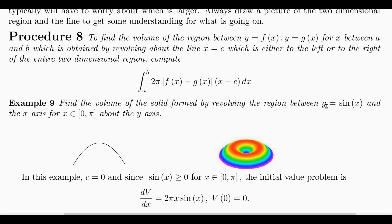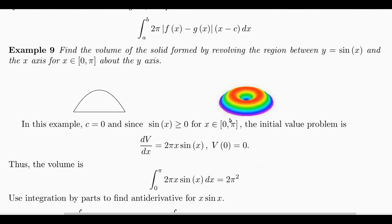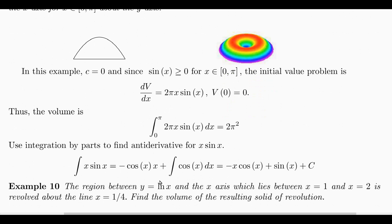Here's an example. Revolve the region between Y equals sine of X and the X-axis for X between zero and pi around the Y-axis. In this example, c equals zero, so the distance to the Y-axis is X. The integrand is 2 pi times X times sine of X, and integrating from zero to pi gives 2 pi squared. It's not hard, but you do have to use integration by parts.